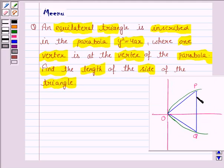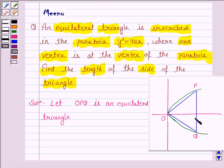So, we are given an equilateral triangle inscribed in the parabola. Now, since OPQ is an equilateral triangle, each angle of this triangle is 60 degrees.